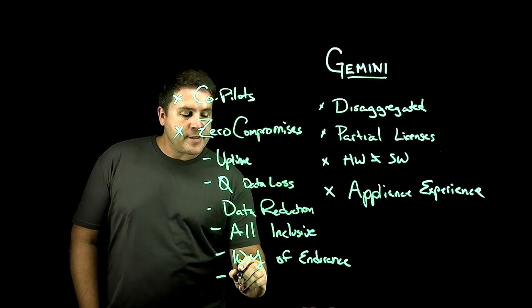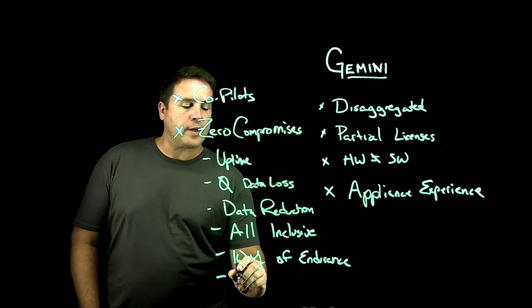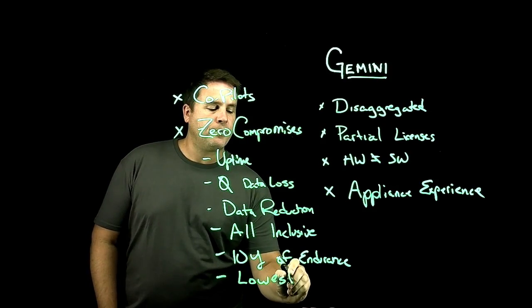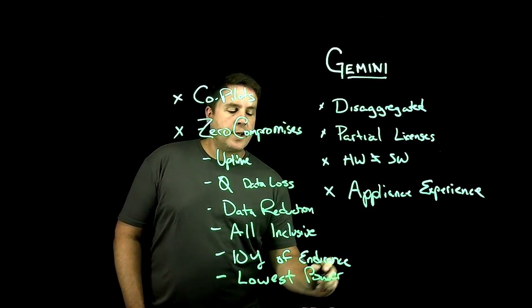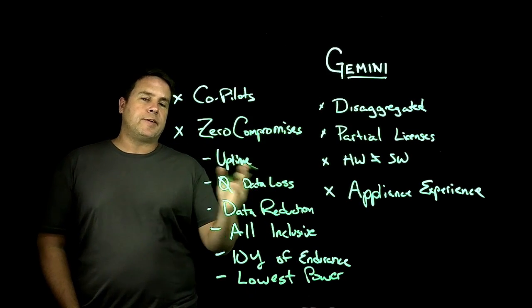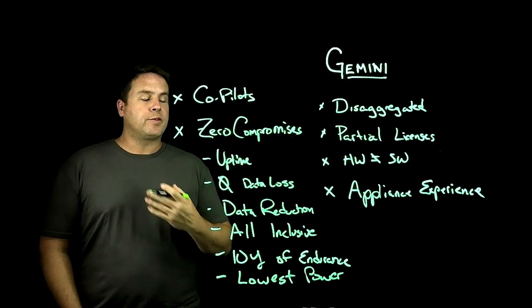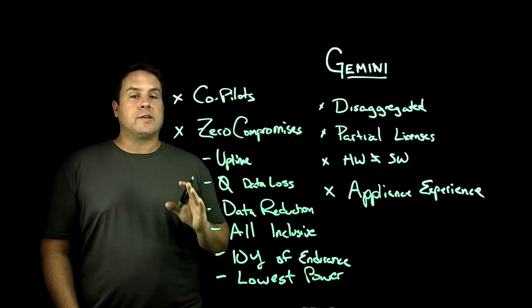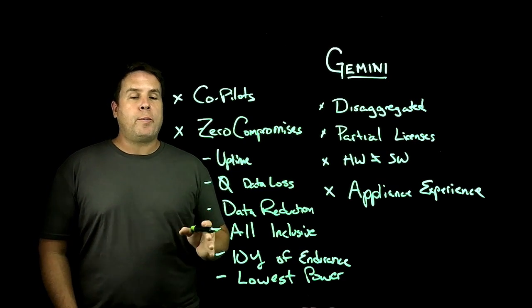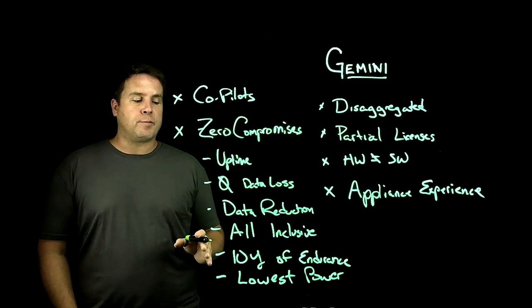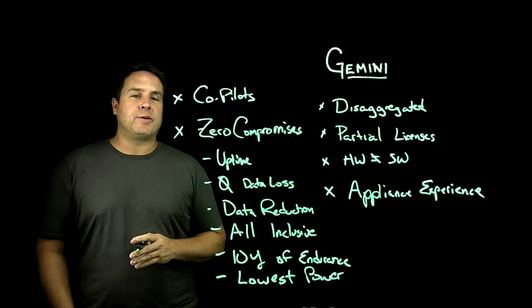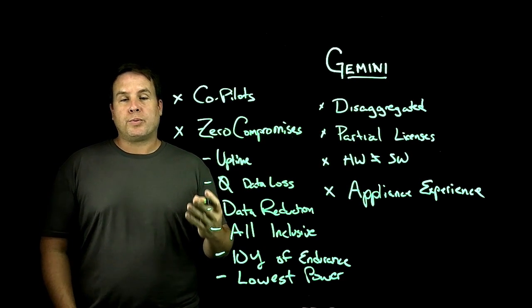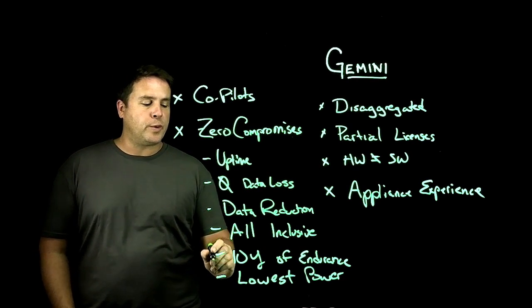We recently introduced a new program which guarantees absolute lowest power. We've been studying the relative attributes of different systems and concluded that the disaggregated shared everything architecture is by far the best approach to delivering low power storage infrastructure. We're so confident we guarantee that with carbon offsets we would buy for customers if you can deploy a storage system with a lower power envelope than what we can build.